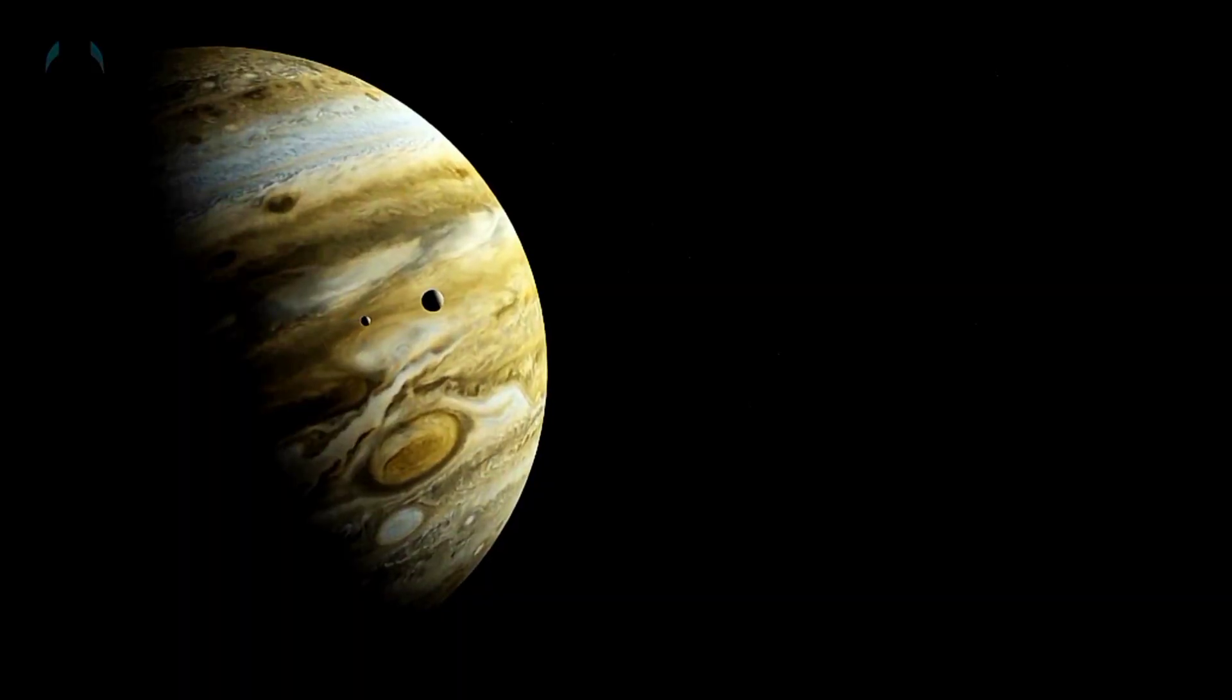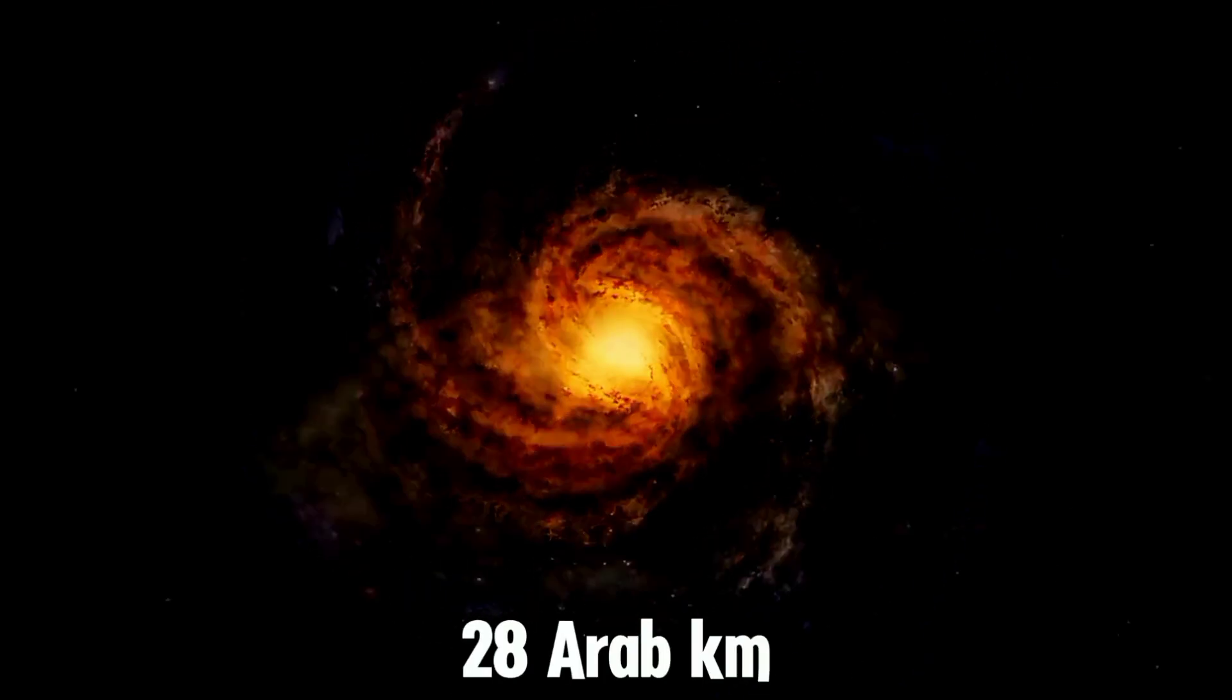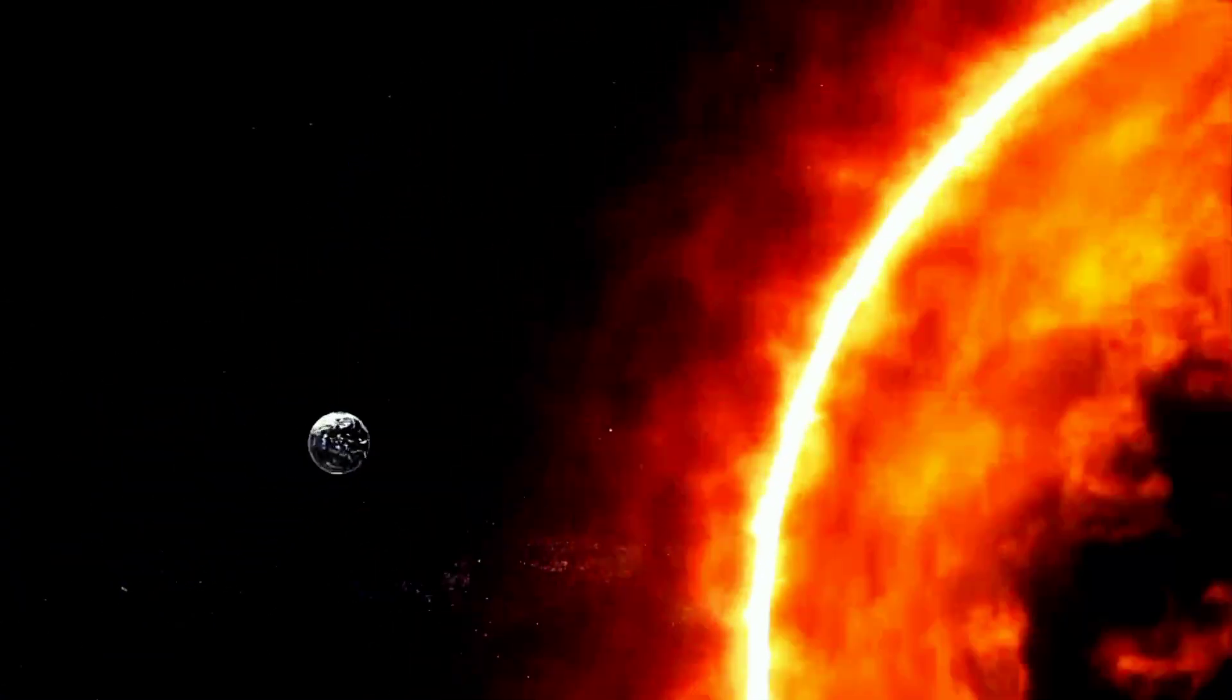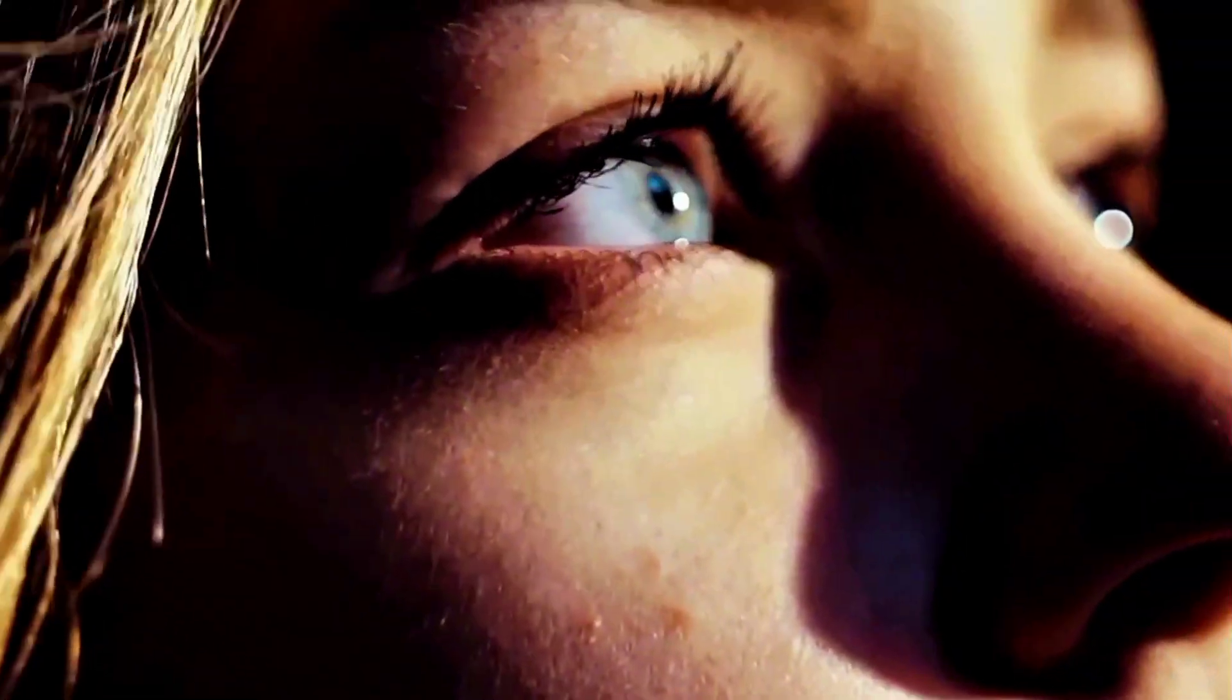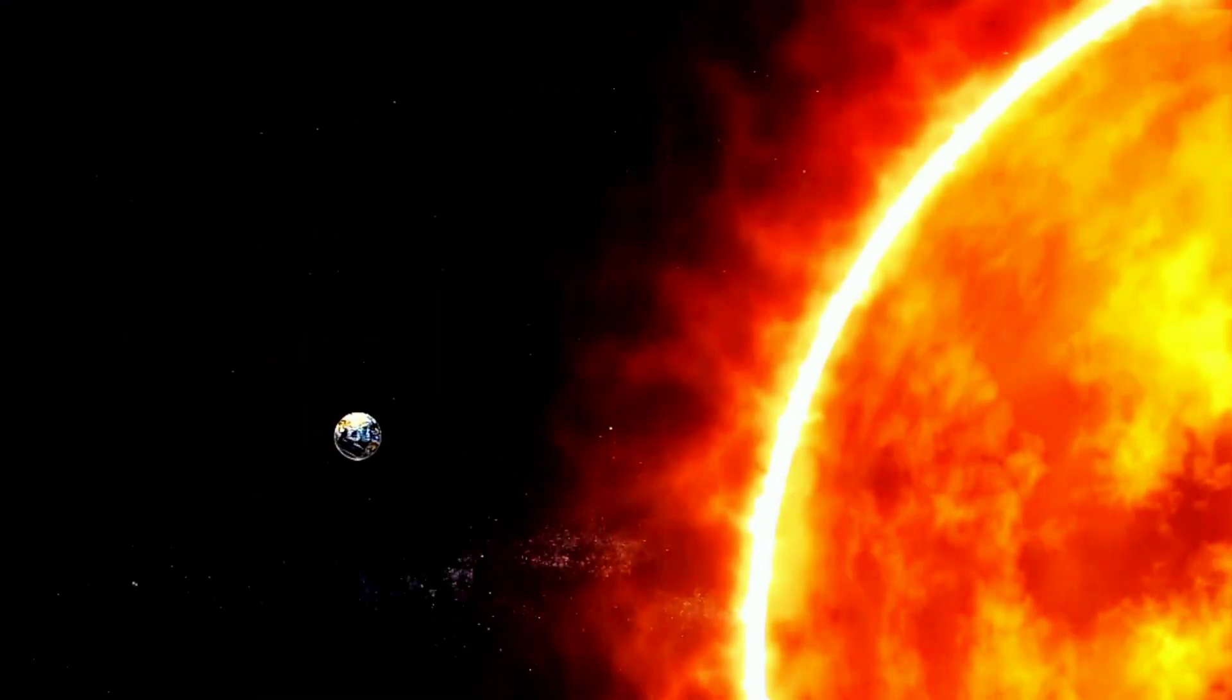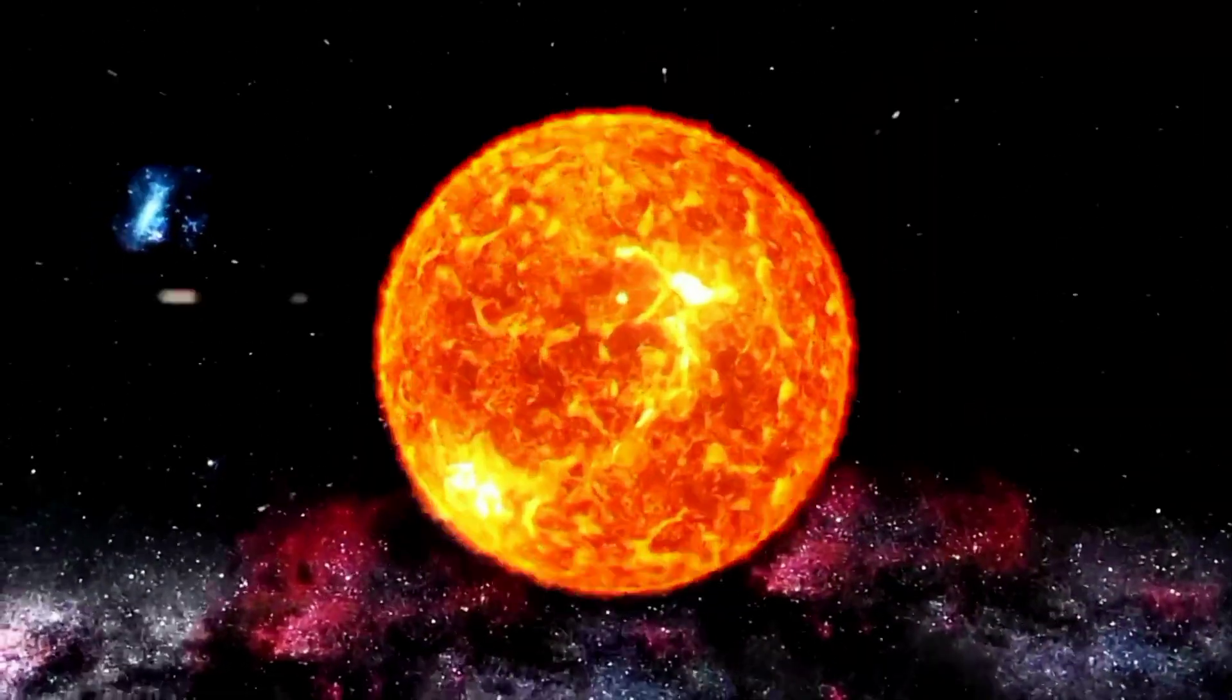For example, Jupiter has around 90 moons. The total width of the solar system is about 28 billion kilometers. The Sun is its center, and it is about 100,000 times larger than Earth. Now think about it. Earth is like a grain of sand in front of the Sun. But this is just the beginning.